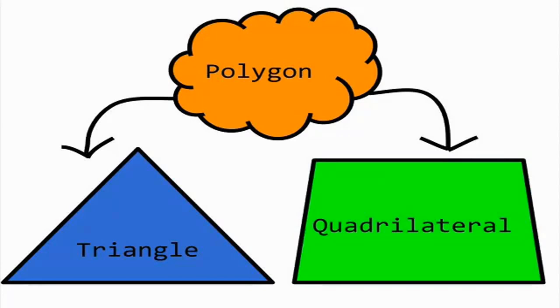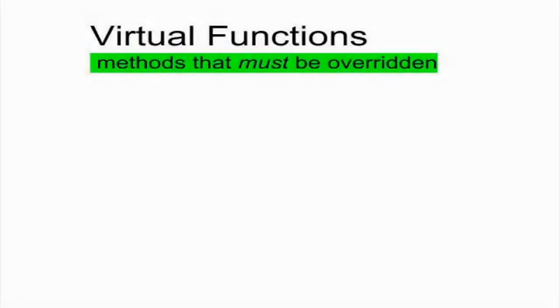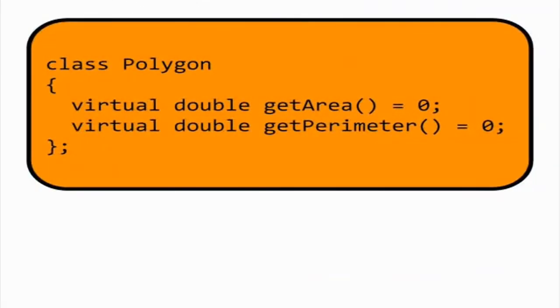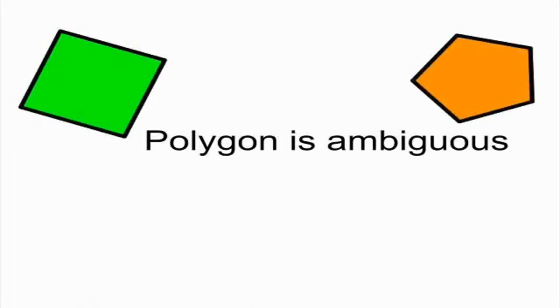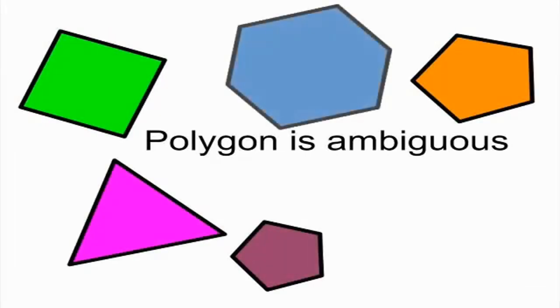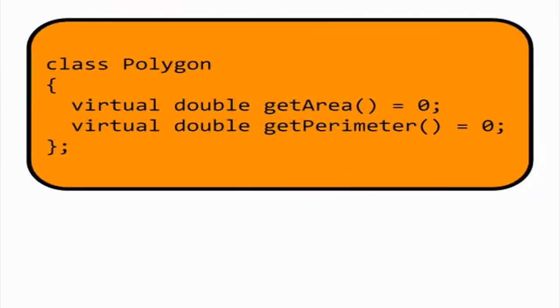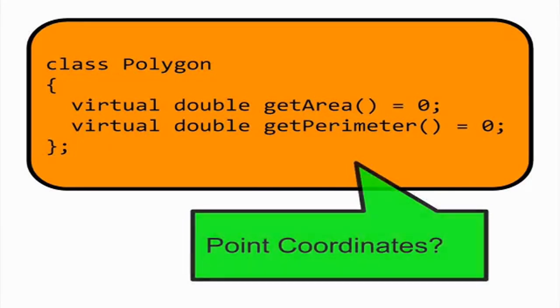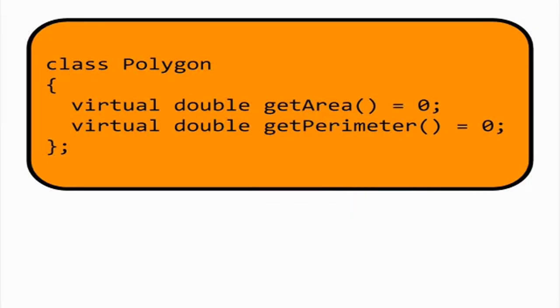In C++, an abstract class has at least one virtual function. A virtual function is a method in a base class that must be overridden by its derived classes. We declare the virtual function with the keyword virtual and set the function equal to zero. Let's give the polygon class two virtual functions: getArea and getPerimeter. Note that we cannot determine the area or perimeter of a generic polygon since we don't know anything about its specific dimensions — it's impossible to measure without knowing the number of sides and each side length. Still, it's useful to include these as virtual functions in the base class since they describe essential components of any polygon.